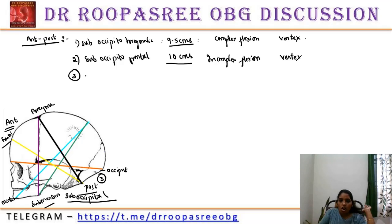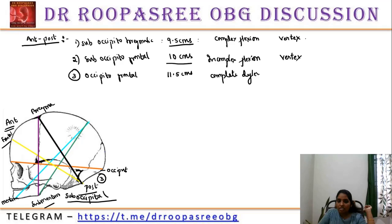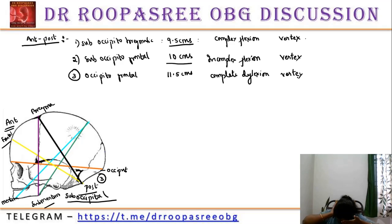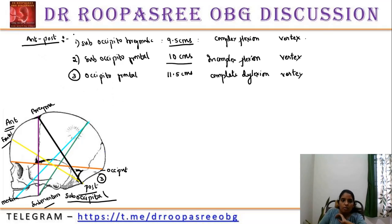The third point is occipito-frontal — from the occiput to the frontal part — about 11.5 centimeters. When we measure from here to here, it is about 11.5 centimeters, that is complete deflection. Deflection means you can see both the occiput and the frontal part. Complete deflection, vertex presentation, about 11.5 centimeters. These are the three diameters from the posterior side. Total is six — three posterior and three anterior.